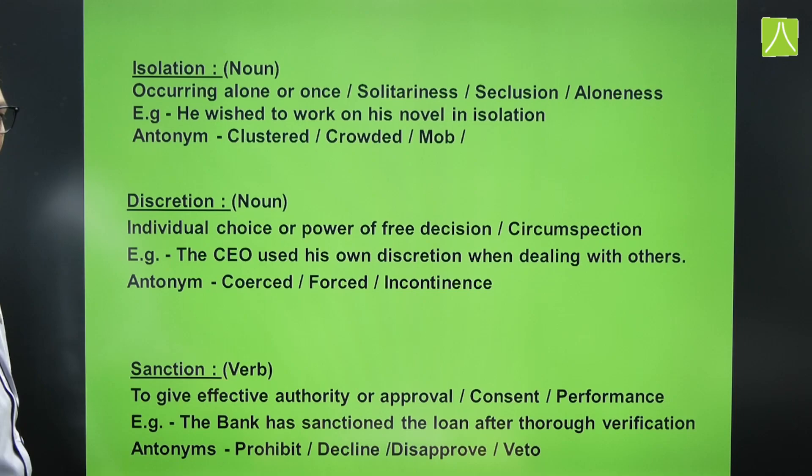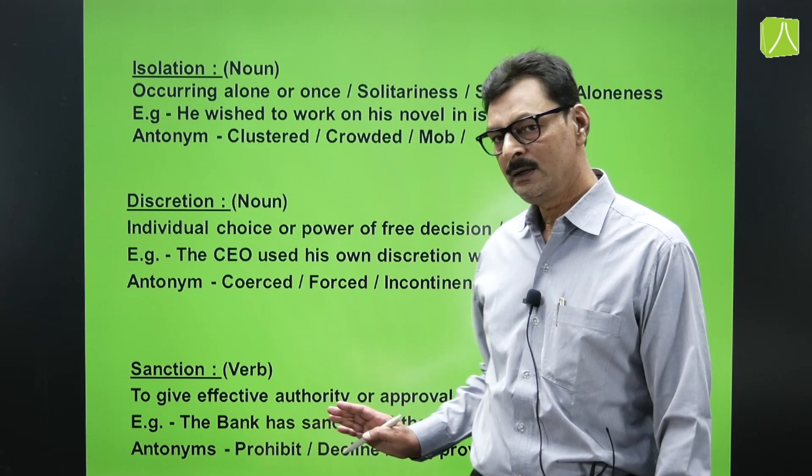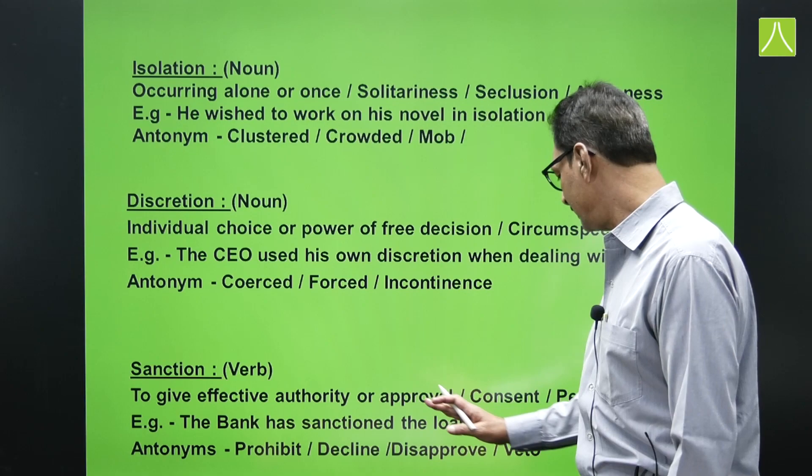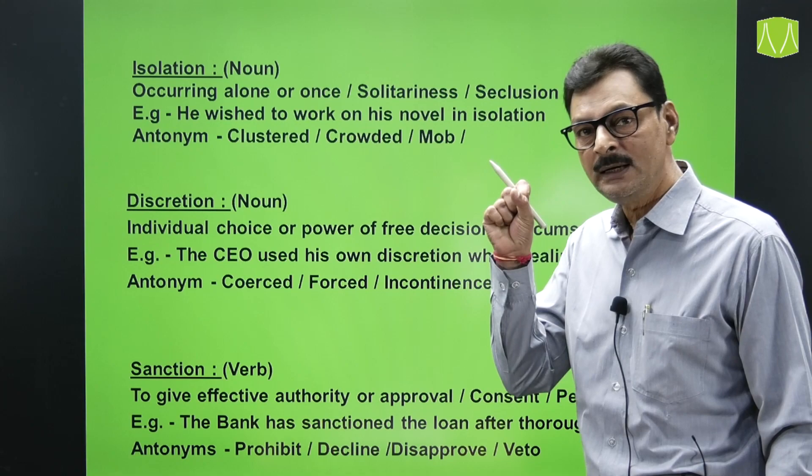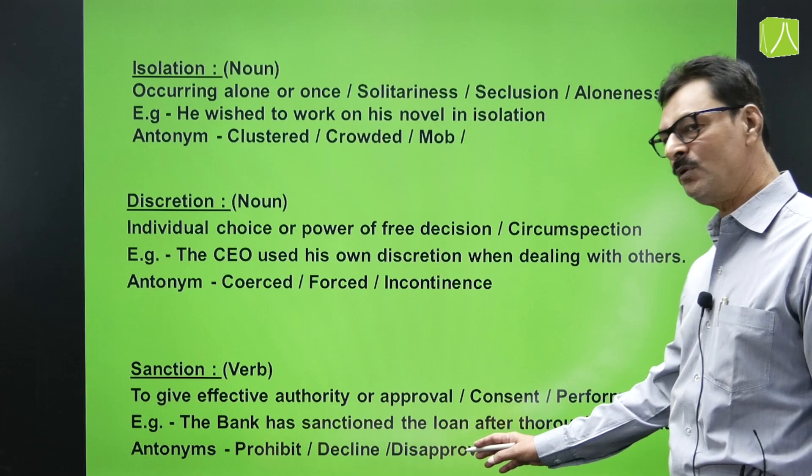One more word: 'sanction,' used as a verb, meaning to give effective authority or approval — to grant consent. Synonyms include grant and consent. Example: 'The bank has sanctioned the loan after thorough verification.' Antonyms are prohibited, declined, disapprove, and veto.